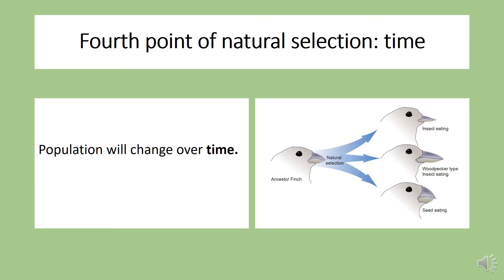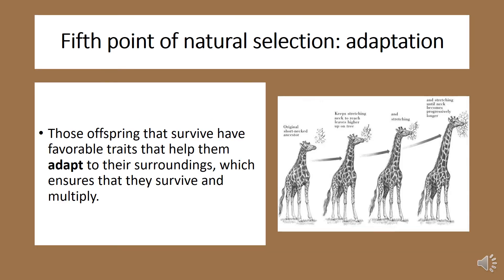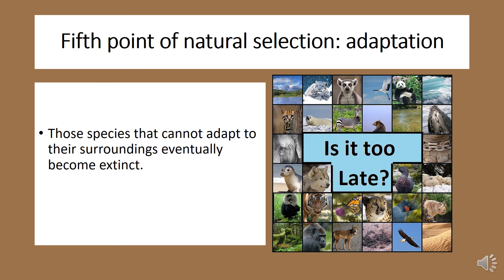The fourth point of natural selection is that populations will change over time. Changes in populations usually happen within one or a few generations due to natural or human events. The fifth point brings us back to adaptation: offspring that survive have favorable traits that help them adapt to their surroundings, ensuring they survive and multiply. Unfortunately, species that can't adapt to their surroundings eventually become extinct.